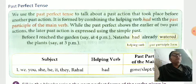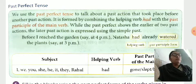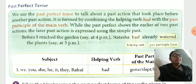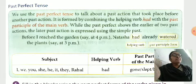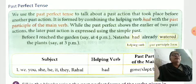V1, V2, V3: V1 means the base form of the verb. V2 means the past tense form. V3 means the past participle form.